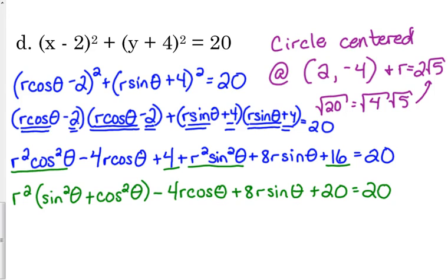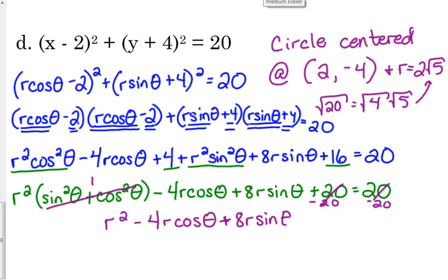4 and the 16 is 20. Okay. Sine squared plus cosine squared is 1. What can I do with those 20's? They cancel. So, if I subtract 20 from both sides, then they go away. So, this whole thing is equal to 0.